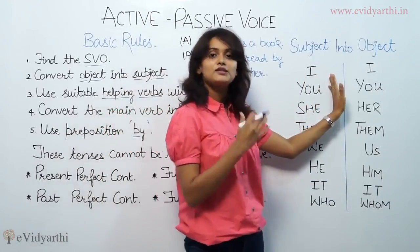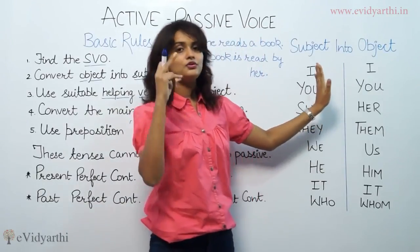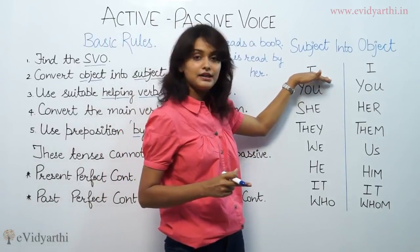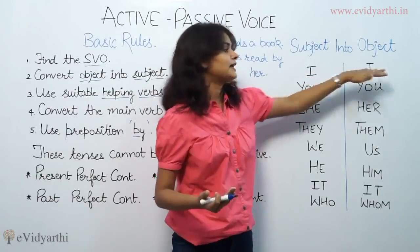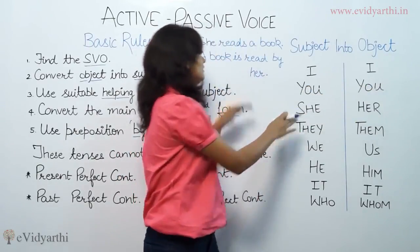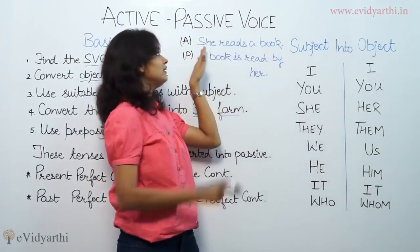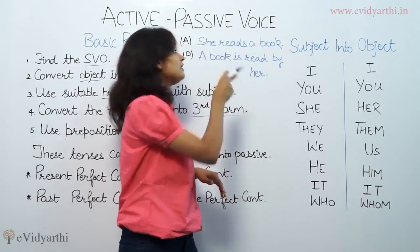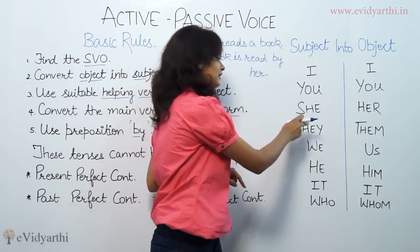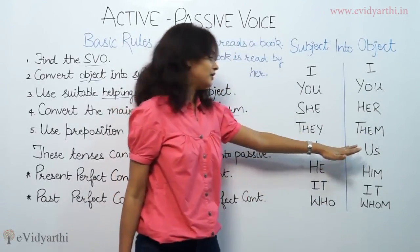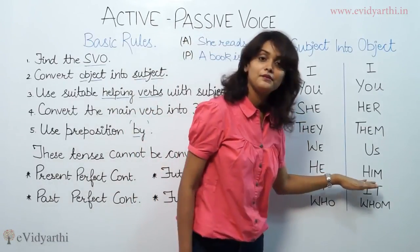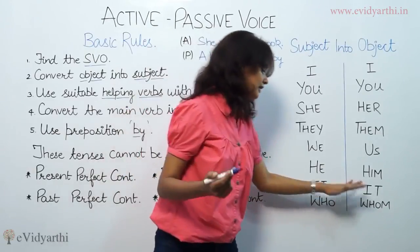When converting to passive, the object changes form. For example: 'She' becomes 'her', so if the subject of the active sentence is 'she', it becomes 'her' after 'by' in the passive. Similarly, 'I' becomes 'me', 'you' stays 'you'. 'They' read a book becomes: the book is read by them. 'We' read a book becomes: a book is read by us.